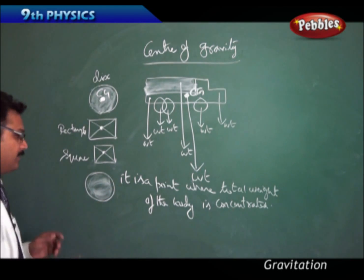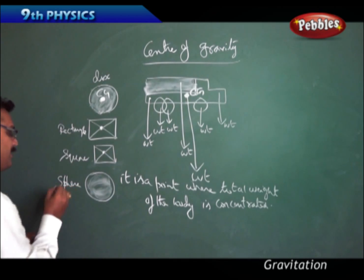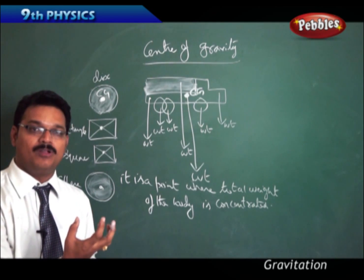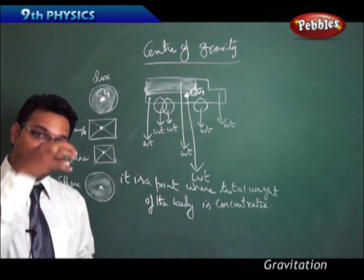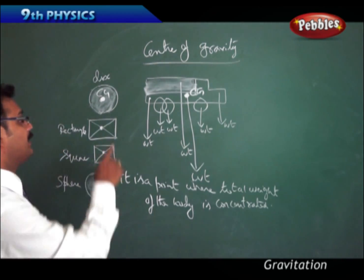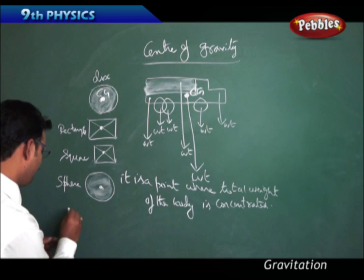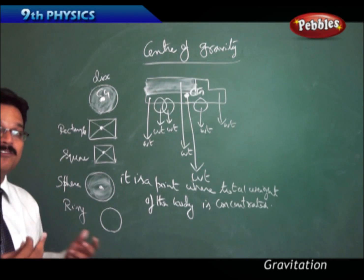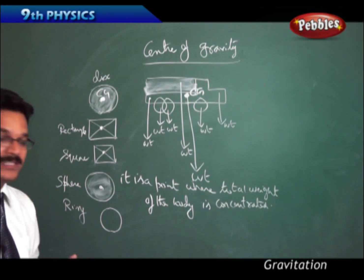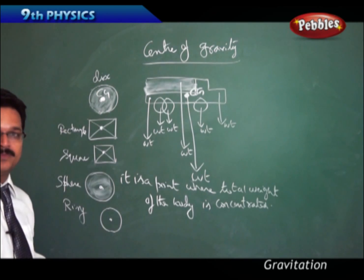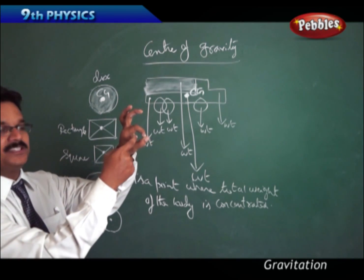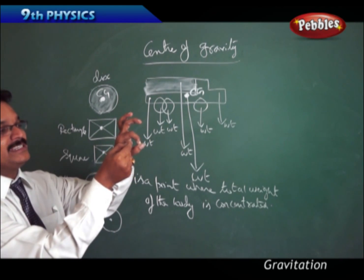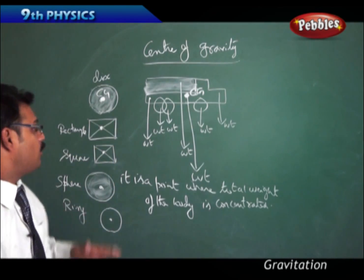For a sphere — a three-dimensional body — the center of gravity is obviously inside the body. Take a cricket ball: the center of gravity exists inside it. For a disc, the center of gravity is on the surface. Now if you take a ring — just a circle with no mass inside — where will the center of mass be? Surprisingly, the center of mass is at the center of the ring, which is outside the actual material of the ring.